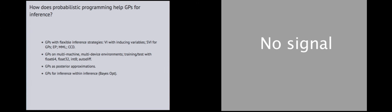You can also use Gaussian processes as posterior approximations — making assumptions with your posterior approximation is actually a form of modeling. You can use GPs as very flexible posterior approximations, and you can use Gaussian processes for inference within inference, which is exactly what Bayesian optimization does.